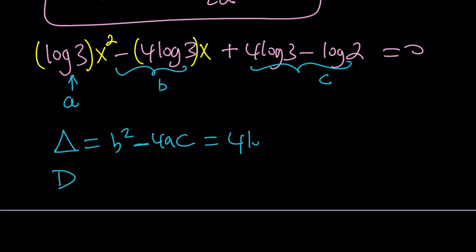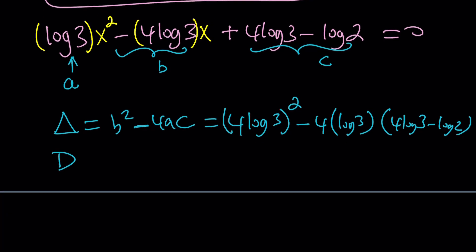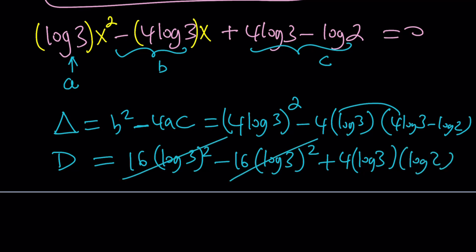Let's go ahead and find out what it is. It's going to be this number squared. By the way, the minus sign will disappear when you square it. Minus 4ac. C is 4 log 3 minus log 2. Now, let's go ahead and simplify this. Delta is going to equal 16 times log 3 squared minus 16 times log 3 squared, which interestingly cancels out, plus 4 log 3 times log 2. And that's what we're going to write under the radical.